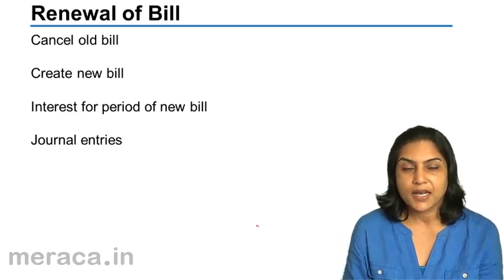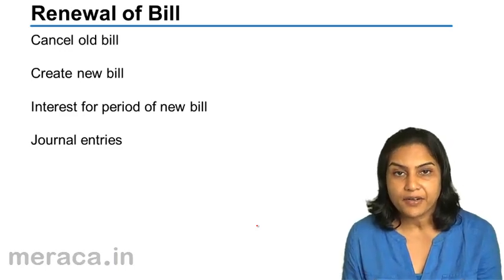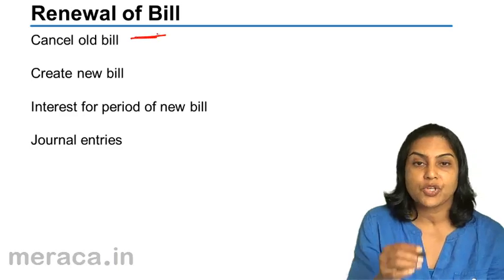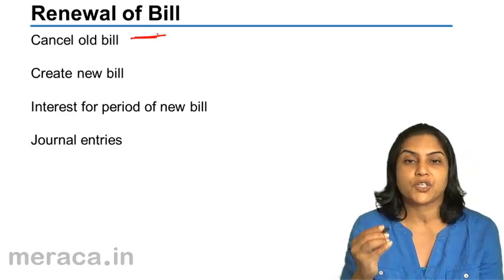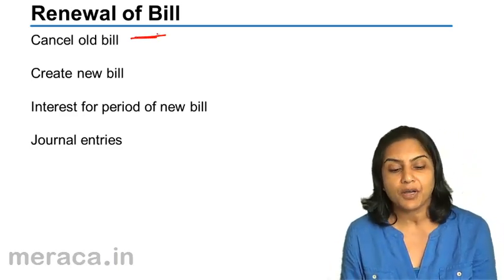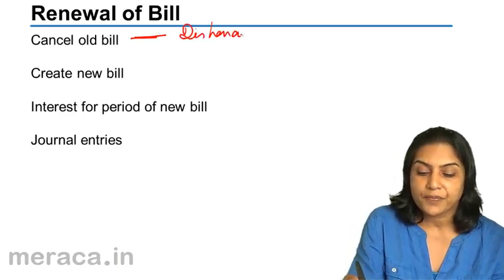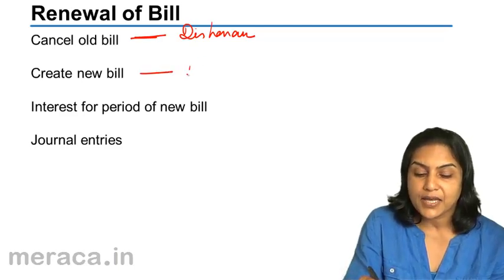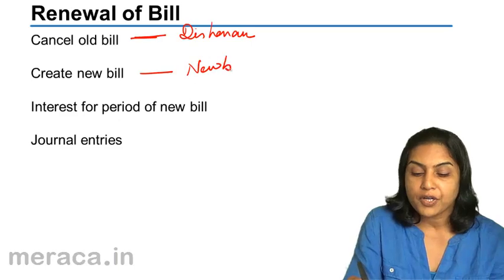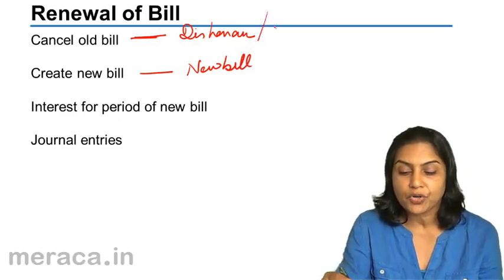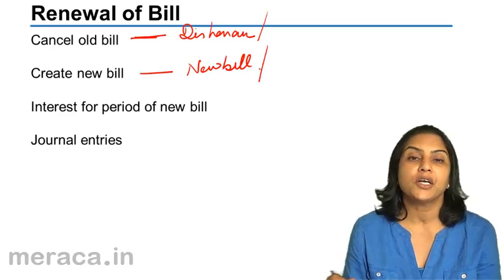In that case, as far as accounting entries are concerned, we cancel the old bill. The entry is passed just like a dishonor of a bill — cancel the old bill with an entry for dishonor. And then we create a new bill and pass an entry for the new bill.